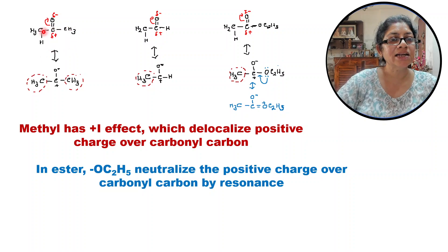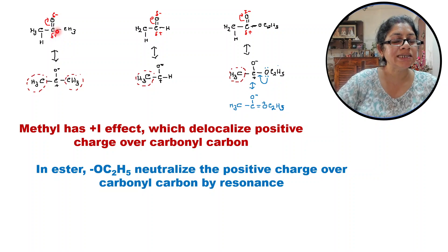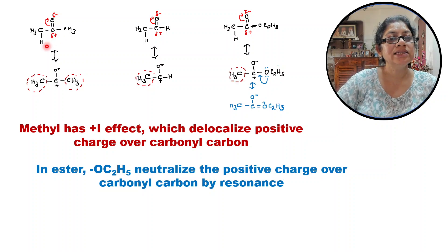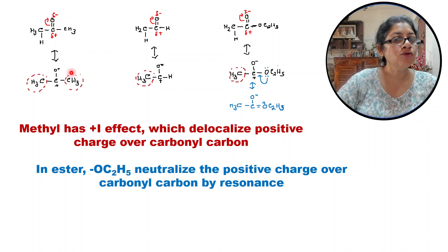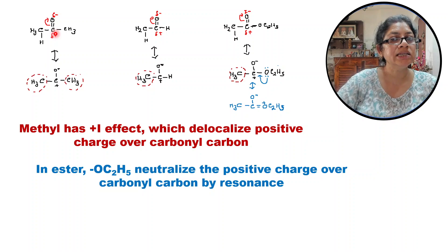Here we can see that in the carbonyl group, oxygen becomes negative and carbon becomes delta positive. Now if this positive center is very strong — or we can say the positive charge is more localized or intensified — then keto-enol tautomerism will be faster. This means the hydrogen will move faster to form the enol form. So we need to find out where the carbonyl carbon positive charge is more intensified.